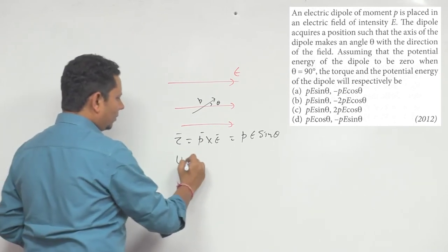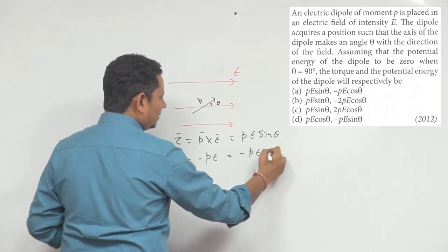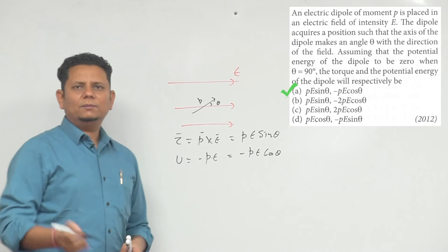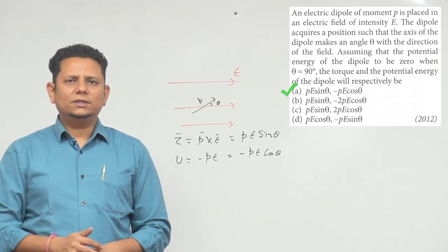Your potential energy will be minus P dot E, so you can write this as minus P E cos theta. Based on this, we can say that option number A, P E sin theta and minus P E cos theta, will be the right answer.